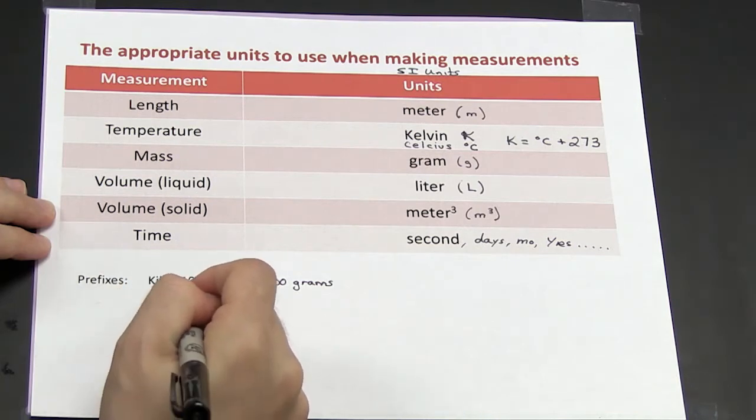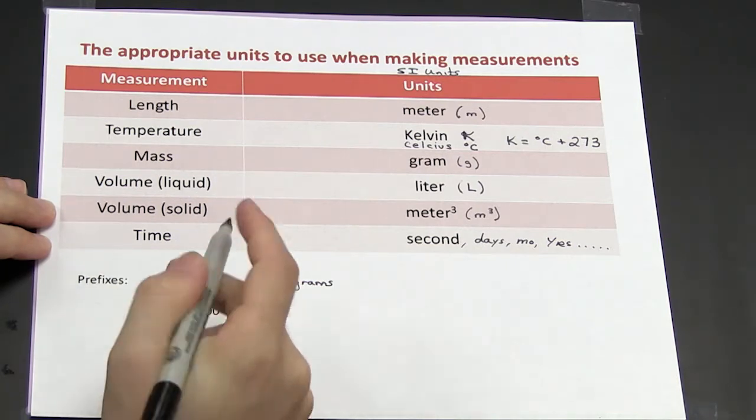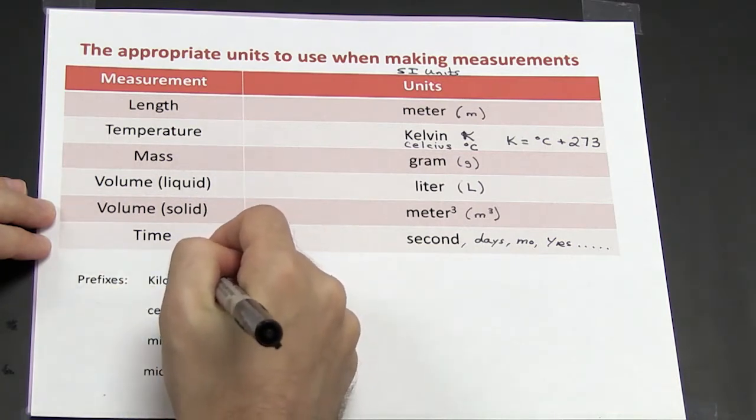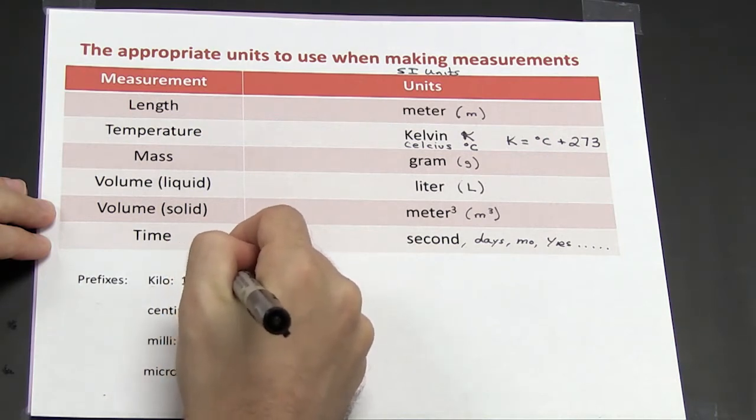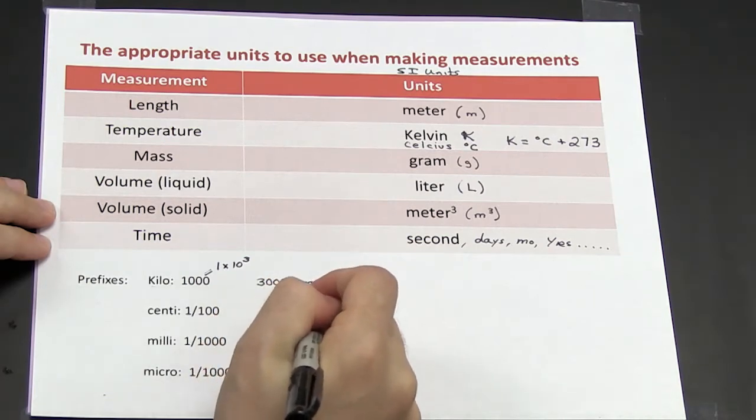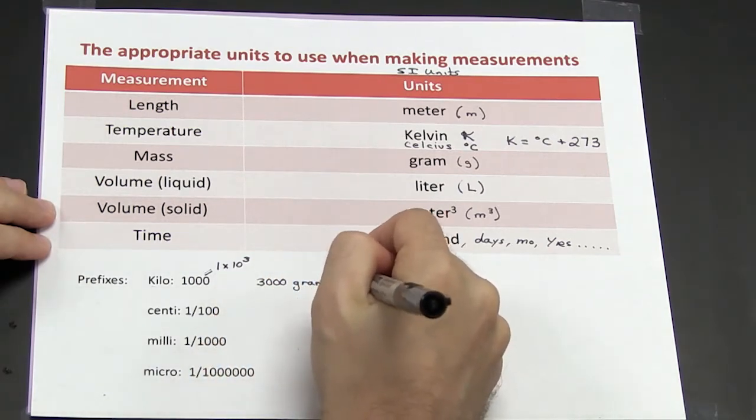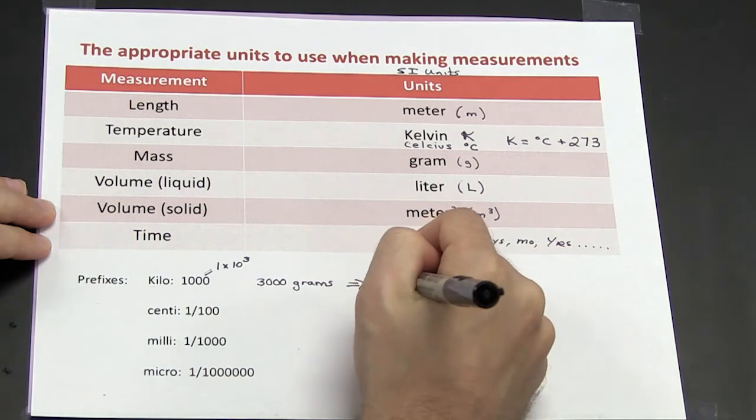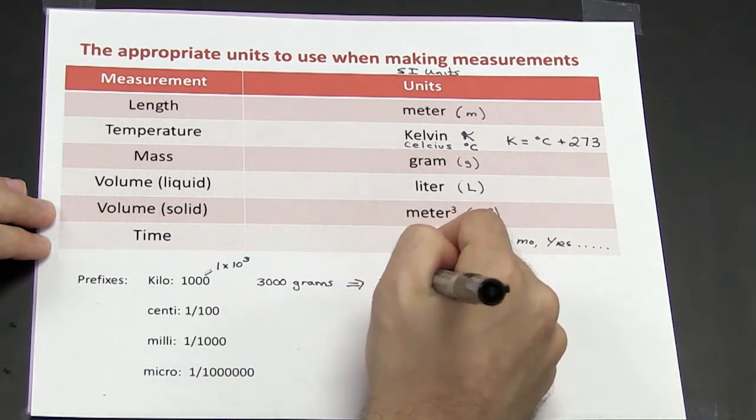Notably here kilo, which represents 1000. 1000 is the same thing as 1 times 10 to the third. So if I rewrite 3000 grams in scientific notation, I would get 3 times 10 to the third grams.